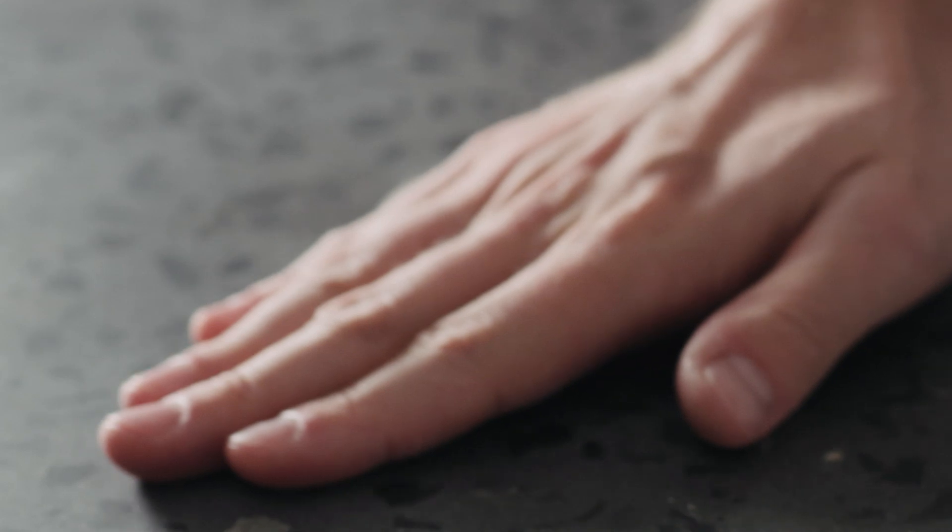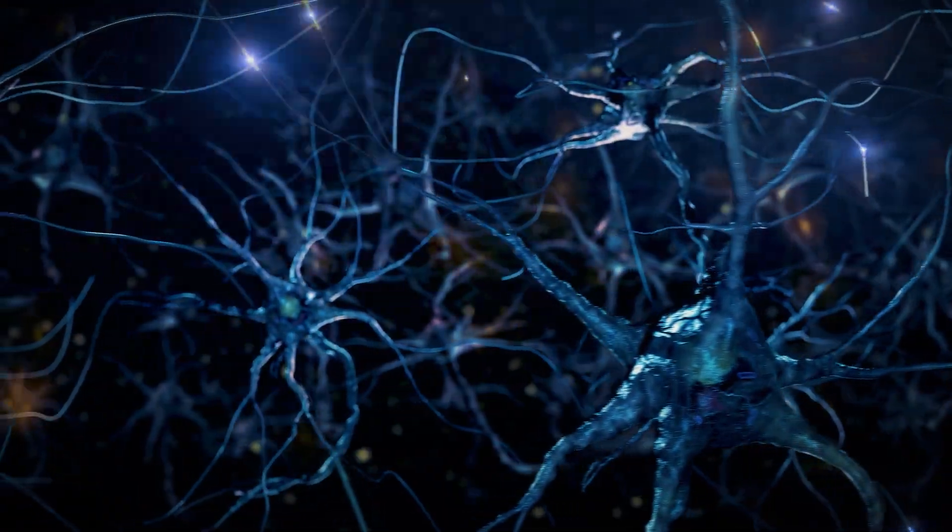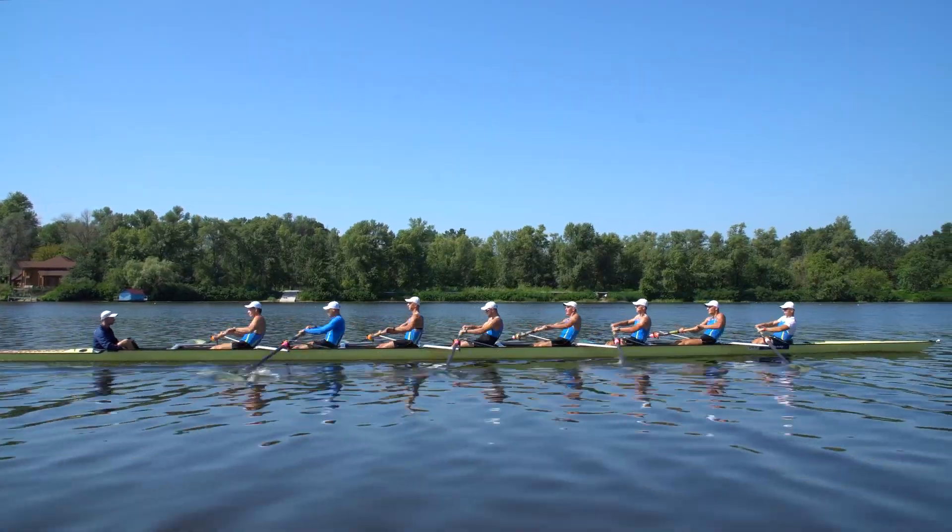How does a gentle touch or slight heat activate ion channels in your skin, which launch electric signals through neurons? And how are these processed in your brain to make your muscles pull back?